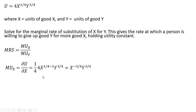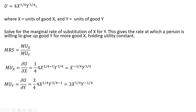The marginal rate of substitution is going to be given by the marginal utility of good X divided by the marginal utility of good Y. Getting the marginal utility of good X, we take the partial derivative with respect to X. The exponent on X comes down in front, we subtract 1 from that exponent, and simplify: one-fourth times 4 becomes 1, and X is now raised to the minus three-fourths power. For the marginal utility of good Y, the three-fourths exponent comes down in front, the 4s cancel, leaving 3 in front, and Y is raised to the minus one-fourth power.